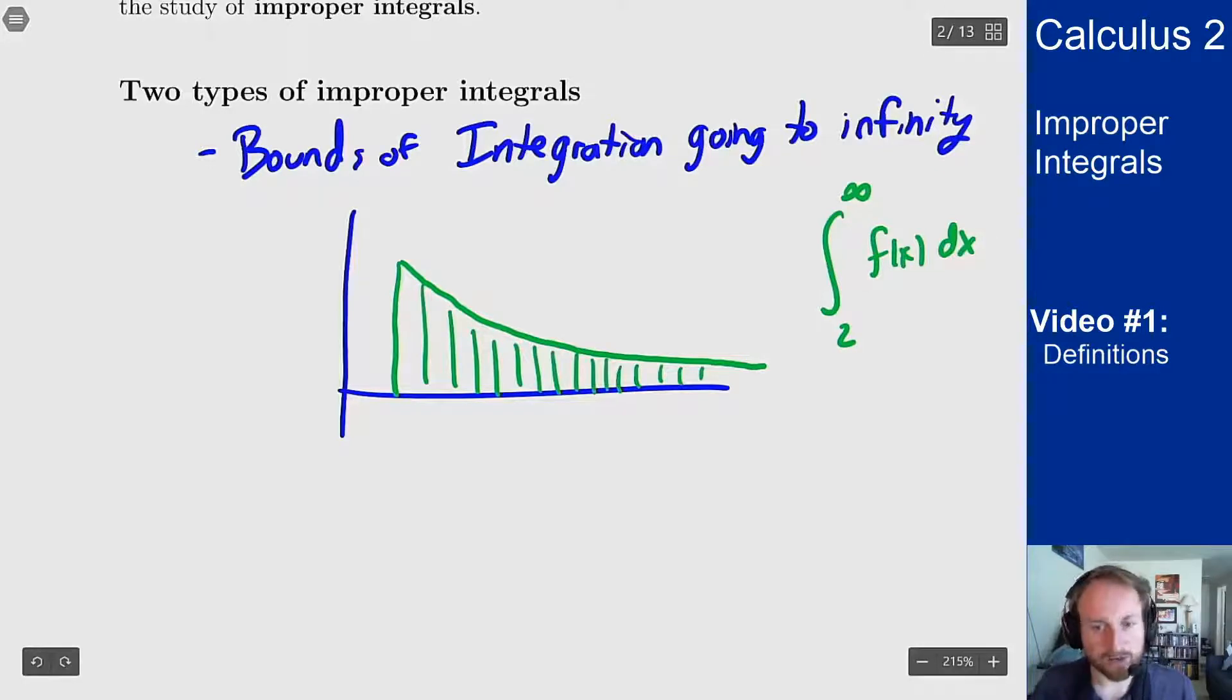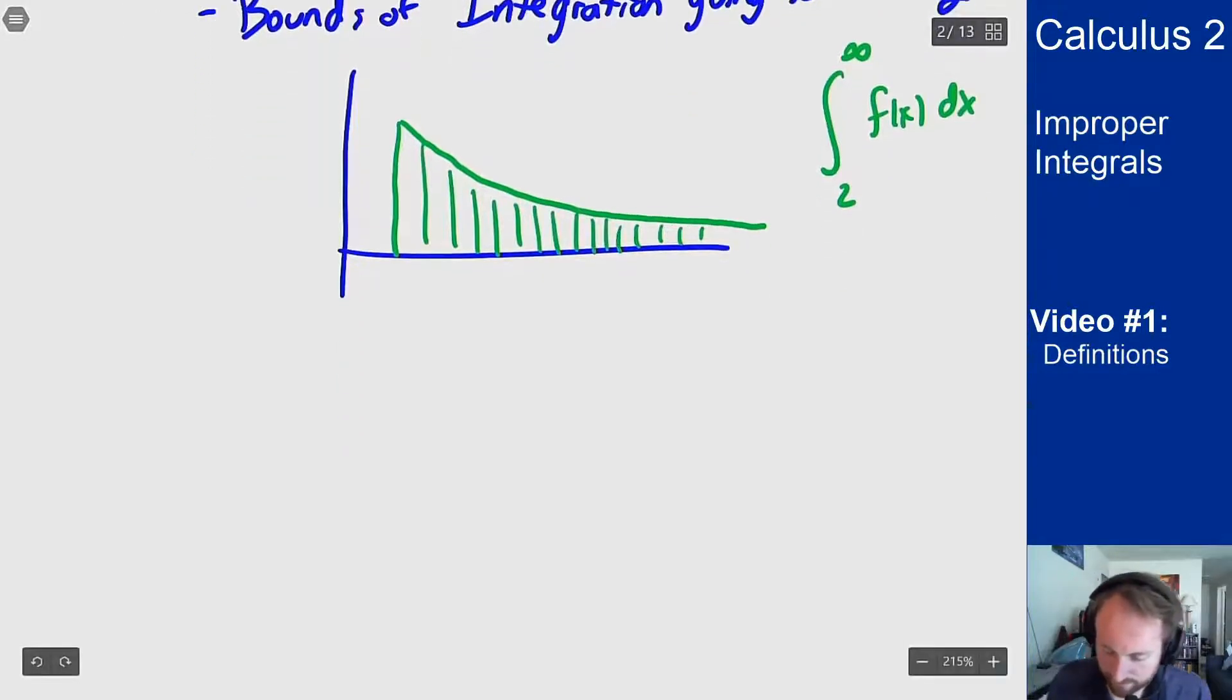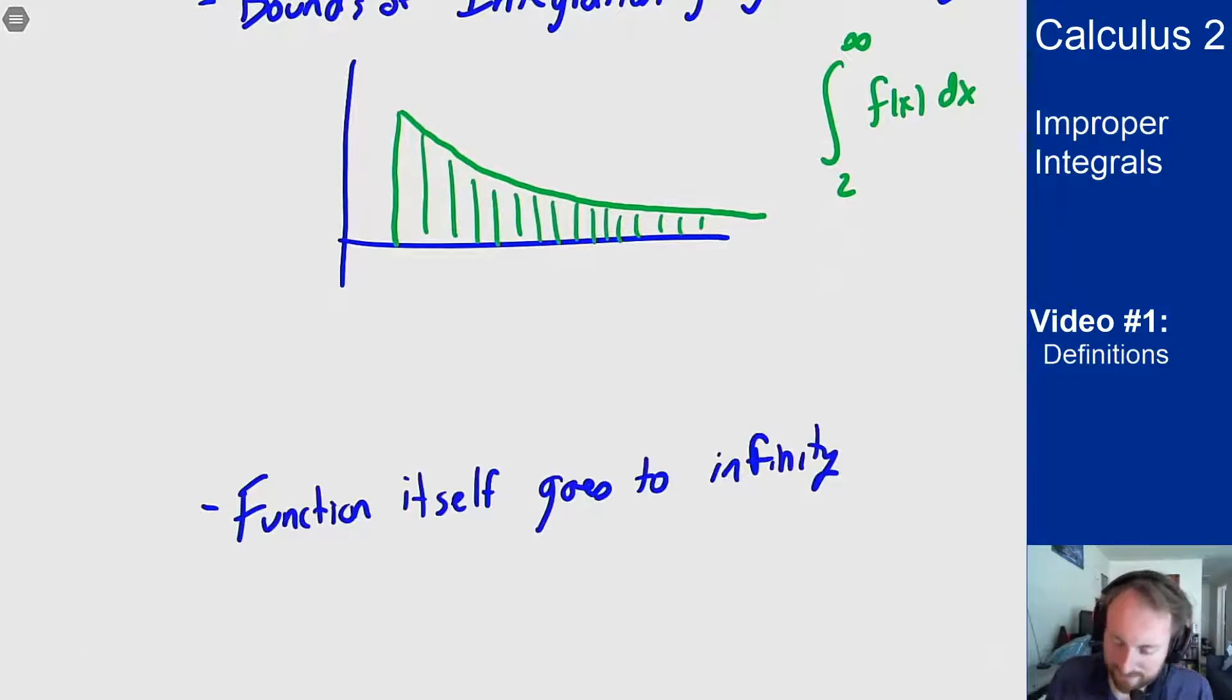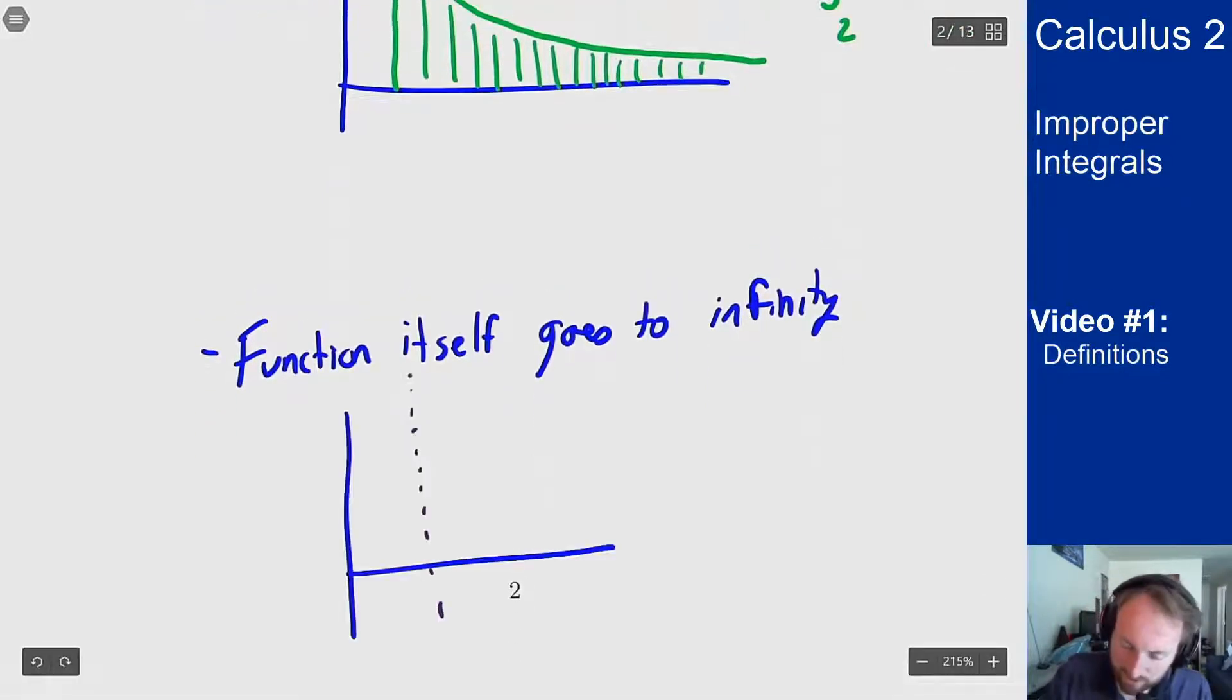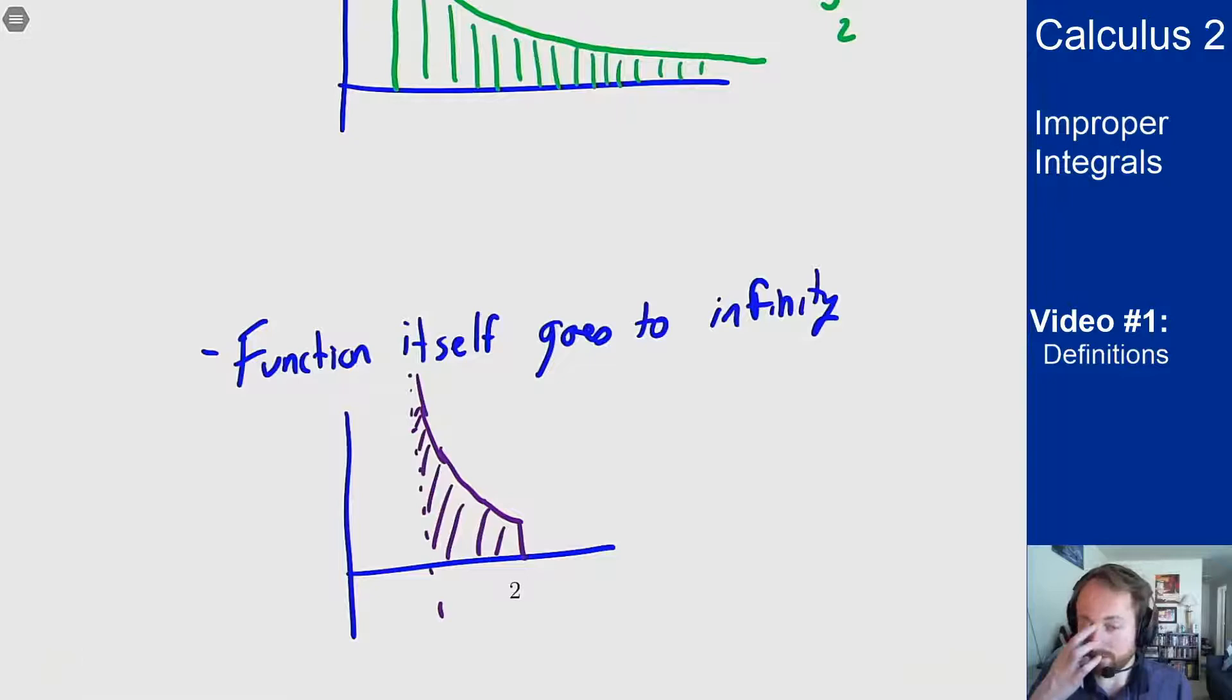A second way is when the function itself goes to infinity. And that picture is something like this. I'll have my function that sort of comes in this way to about here and I want to find this area where this function has an asymptote at that line. So this is one and this is three for the sake of this picture.